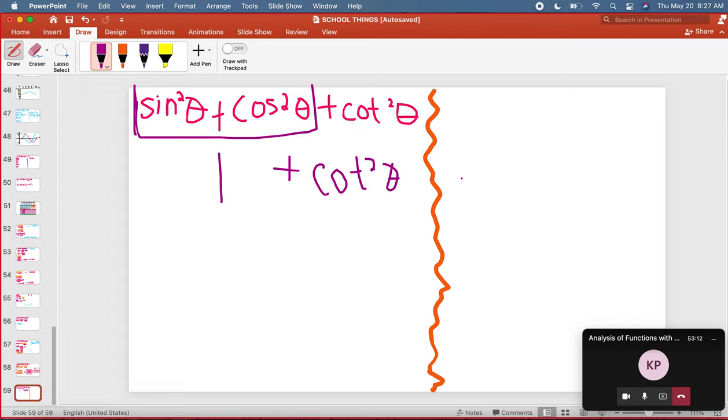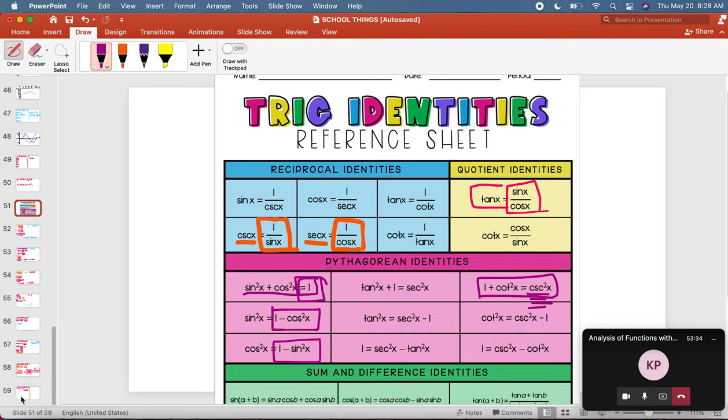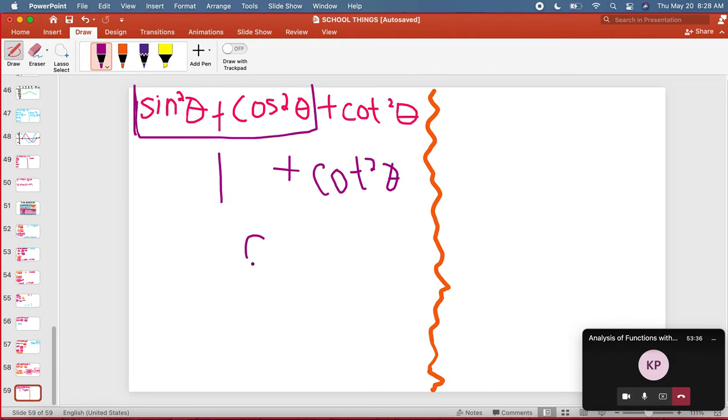The reason why in this case I would not change cotangent squared theta is because I am familiar with my identities and I can already know that cotangent squared theta plus one equals cosecant... and I'm done with my problem.